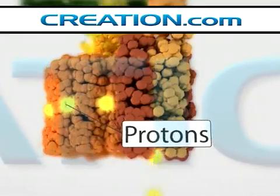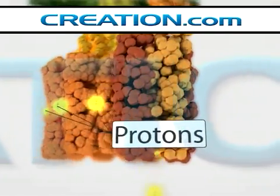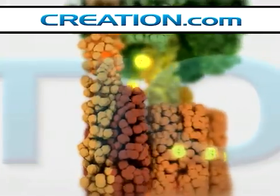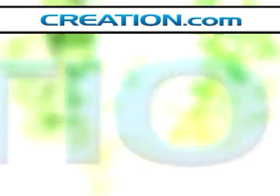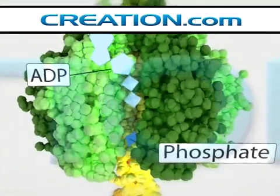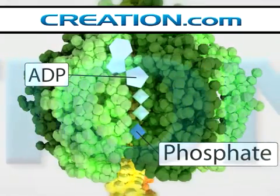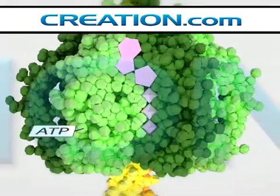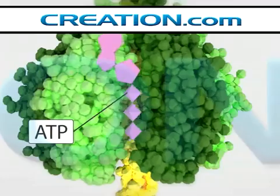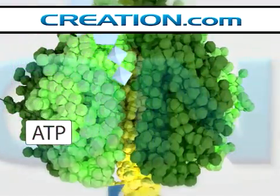A current of protons drives the motor, unlike man-made electric motors which use electrons. This portion of the enzyme is where adenosine diphosphate is combined with a phosphate ion in the presence of a catalyst to produce ATP, which is then released, making way for the next cycle.